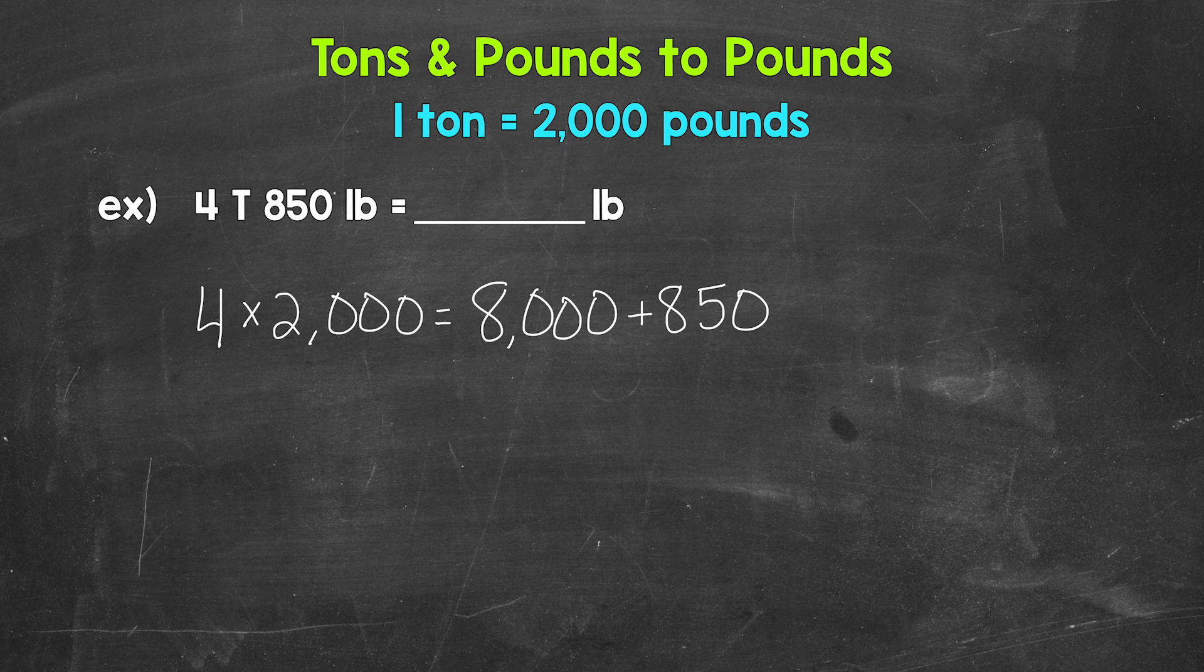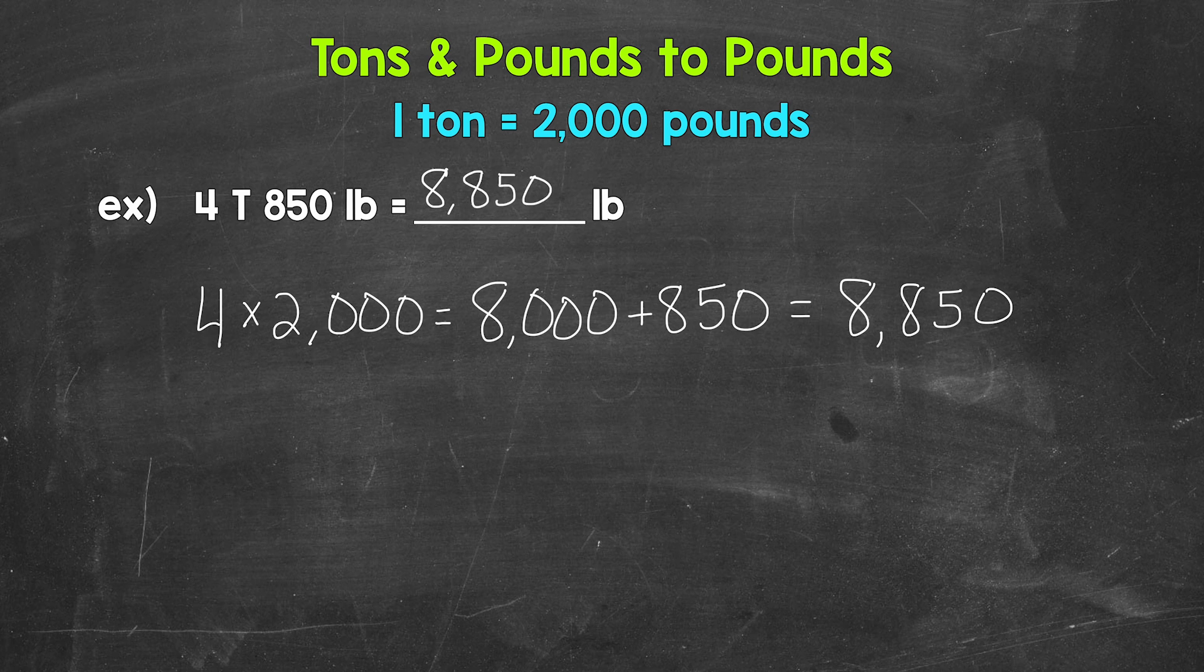8,000 pounds plus 850 pounds gives us 8,850 pounds. So 4 tons 850 pounds equals 8,850 pounds. There you have it.